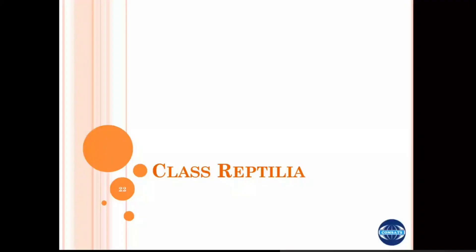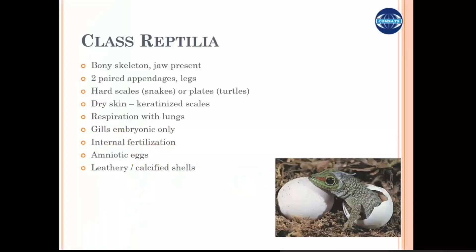Class Reptilia is the advanced animals after amphibians. They have the bony skeleton and have a well-developed jaw with the teeth in it. Appendages are present, always two pairs. The skin has several adaptations that include scales or bony plates as in turtles. The skin is not mucous-covered or moist, and scales are characteristic. Respiration is through a well-developed respiratory system where the lungs are well-developed, and these animals can move away from water sources.